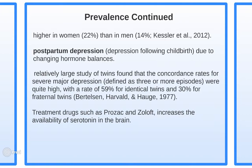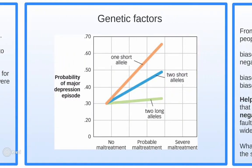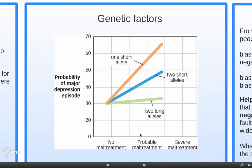A relatively large study of twins found that concordance rates for major depression were quite high — 59 percent for identical twins and 30 percent for fraternal twins. Treatments include drugs such as Prozac and Zoloft, which increase the availability of serotonin in the brain, affecting your mood.